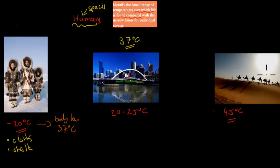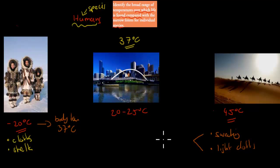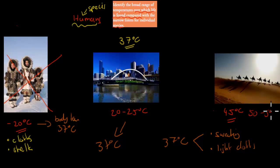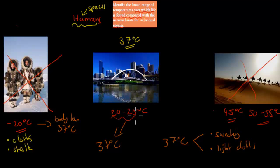Even with the desert people, if it's 45 degrees Celsius they'll be sweating a lot, and they also have light clothes — all this helps them to keep their body temperature at 37 degrees Celsius. People in Melbourne also have a body temperature of 37 degrees Celsius. If the Eskimos had no proper winter clothes or shelter, they wouldn't survive. If it were 50 to 55 degrees on average in the desert, that's a temperature that human beings can't survive for long — they would also die. People in Melbourne are usually quite happy because that temperature is really good for optimum function.